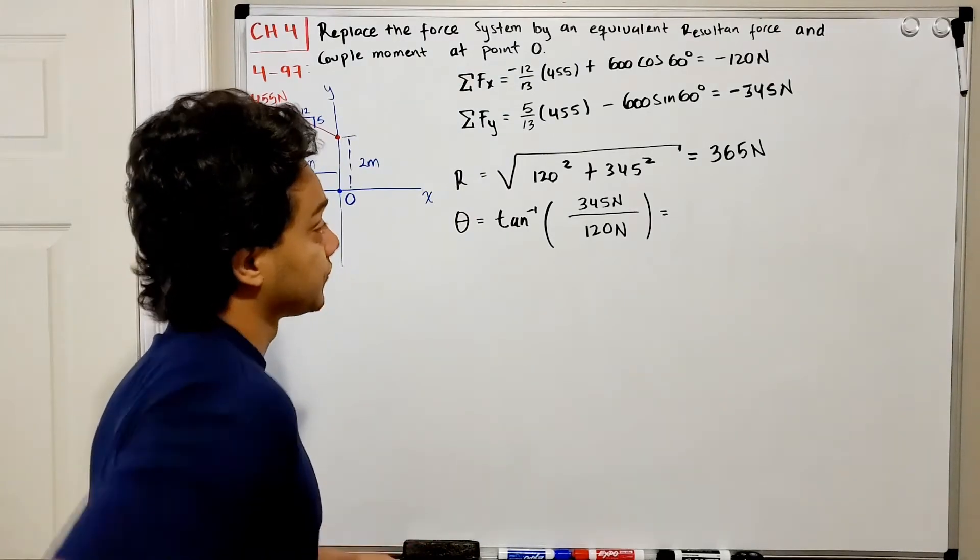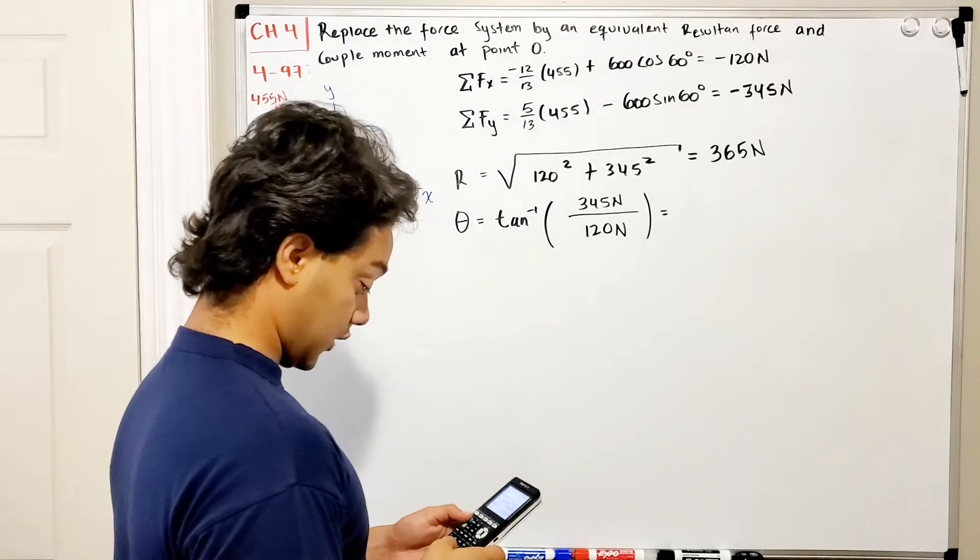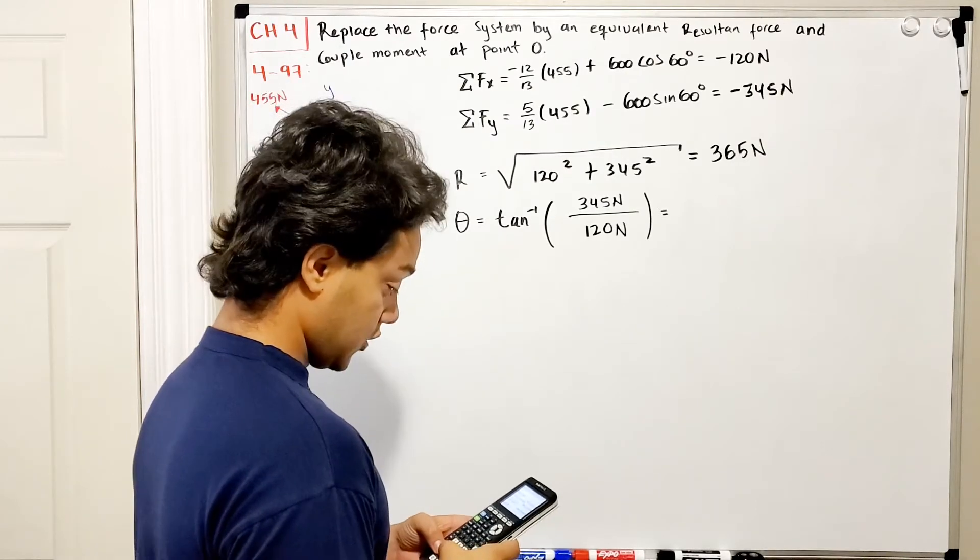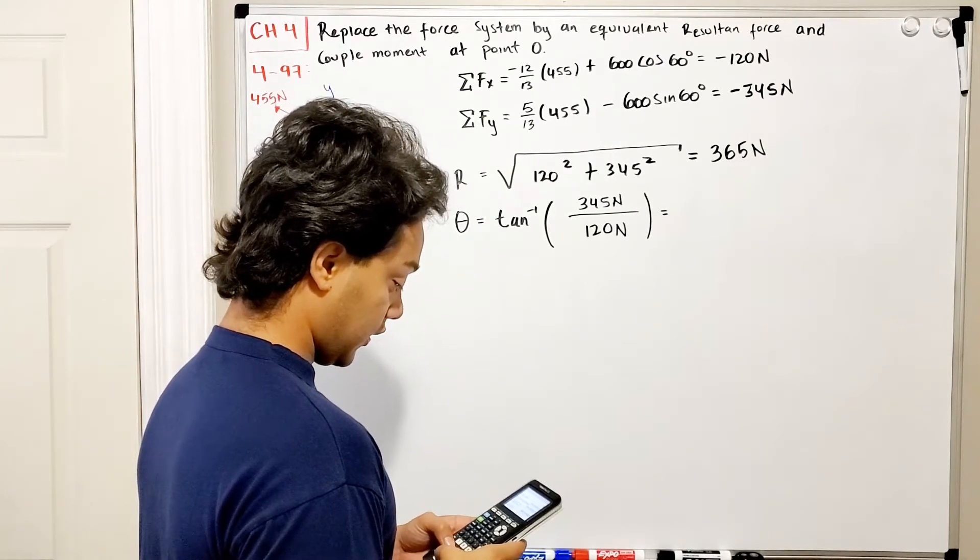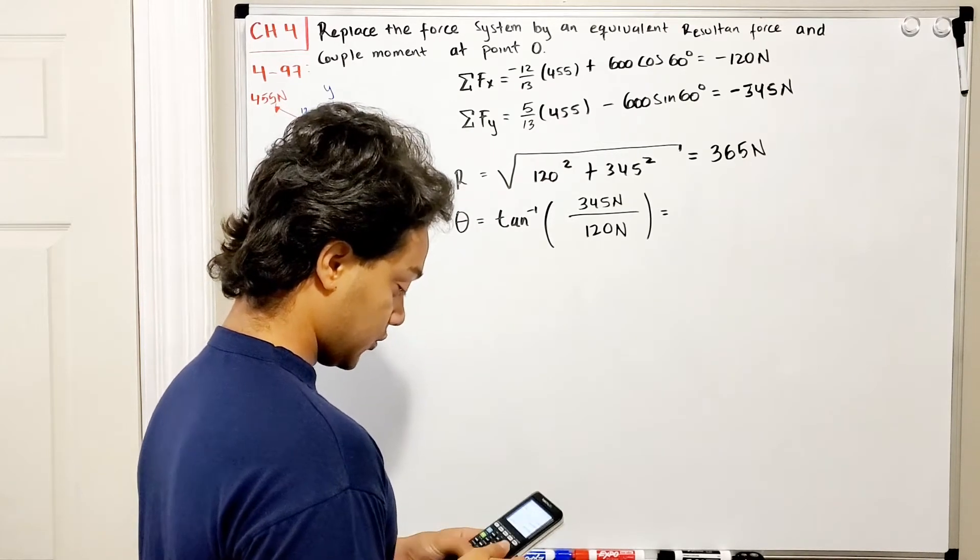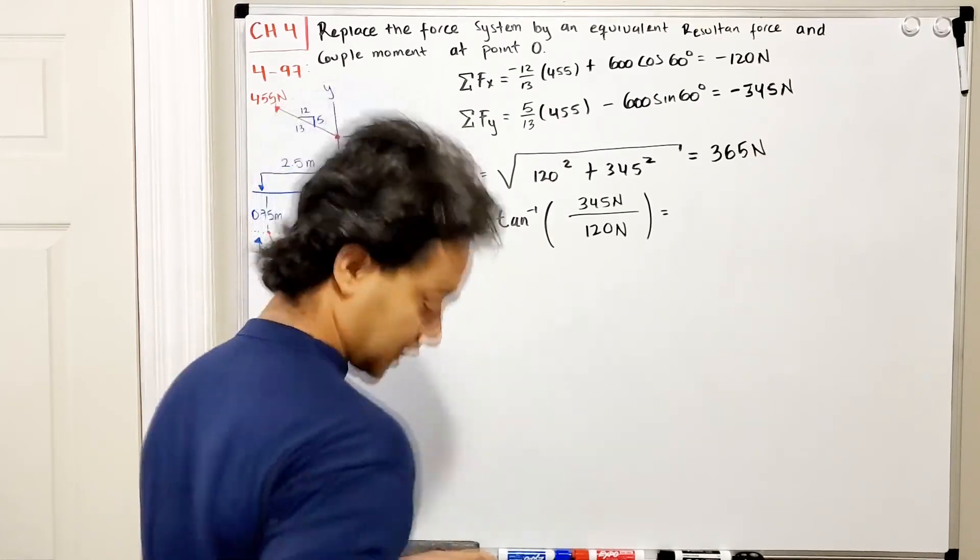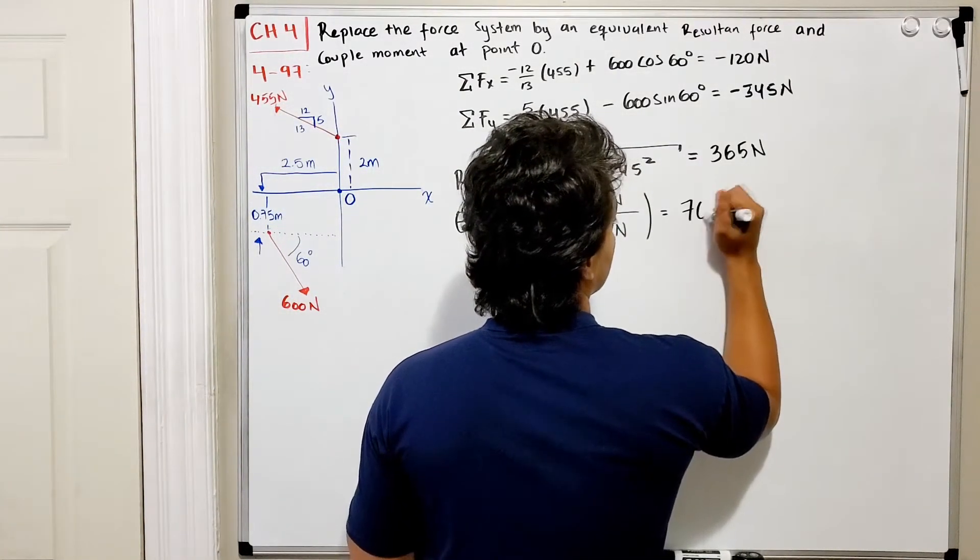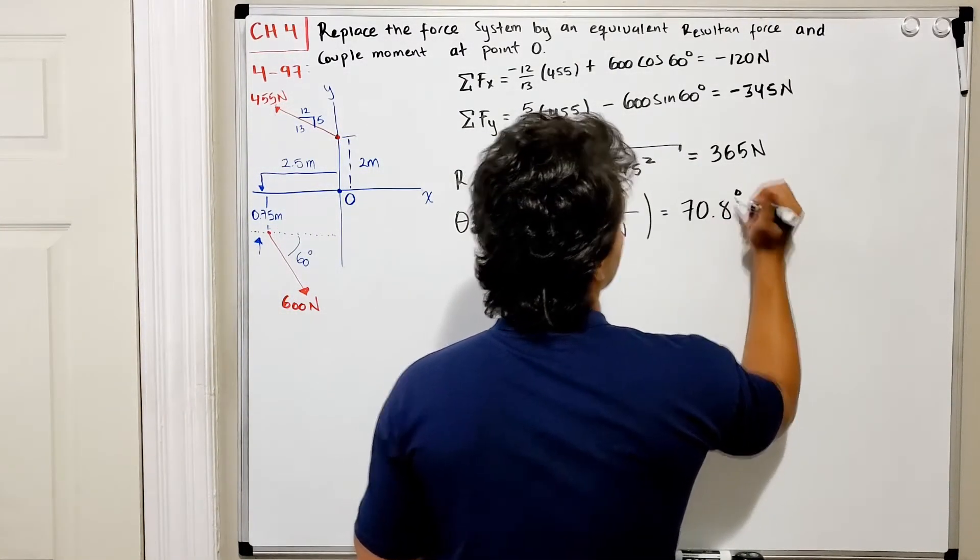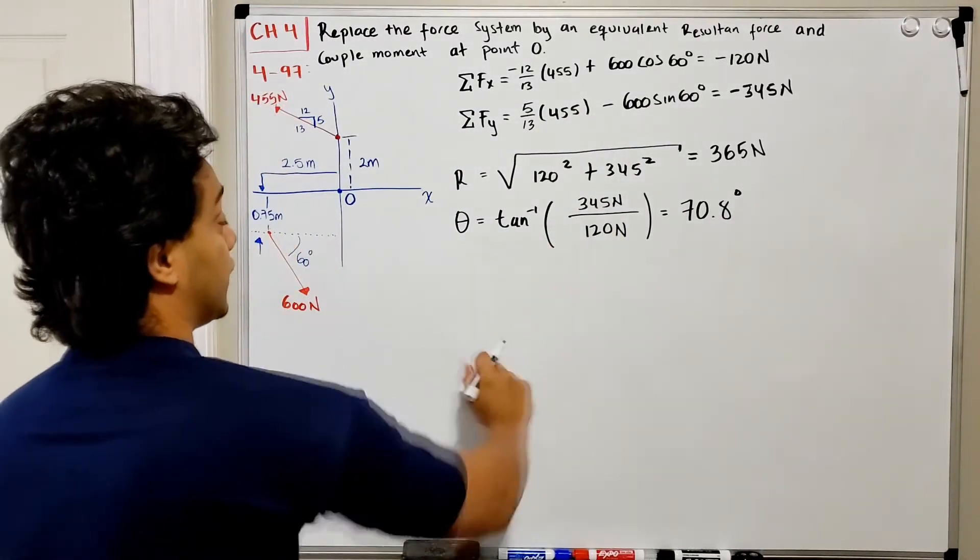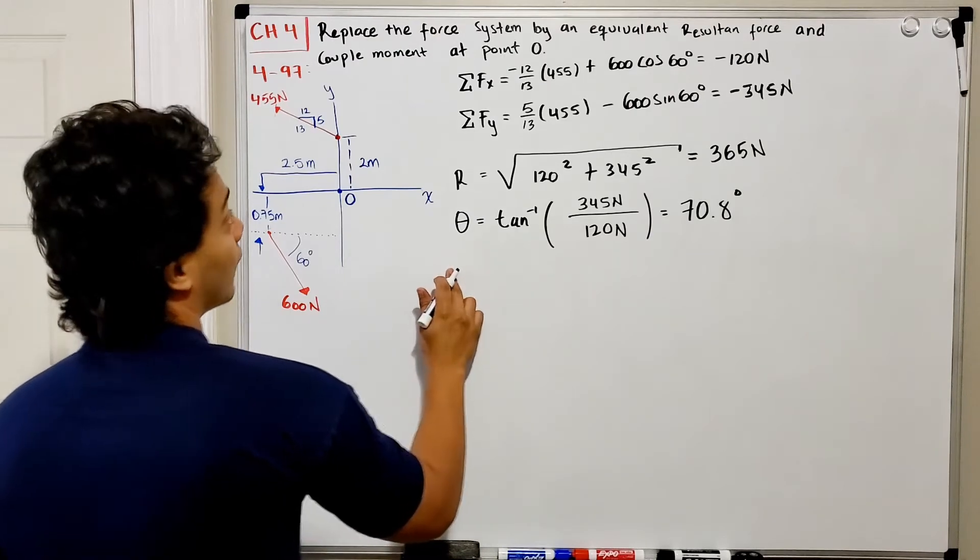Inverse tangent of 345 divided by 120 gives 70.8 degrees. This is the angle theta with respect to the x plane.